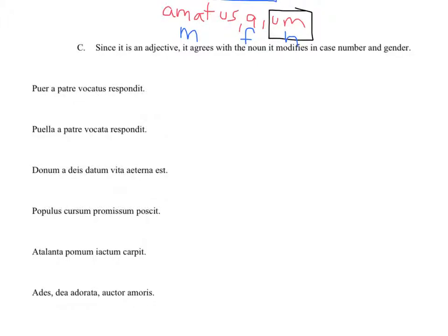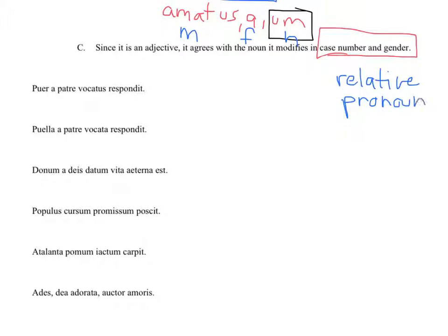Since the participle perfect passive is an adjective, it has to agree with the nouns it modifies in case, number, and gender — that's what it's always been for adjectives. The only case where you've seen that not to be true is with the relative pronoun, but that's not an adjective. Relative pronouns only have to agree in number and gender, not in case. But adjectives have to agree in case, number, and gender every single time.